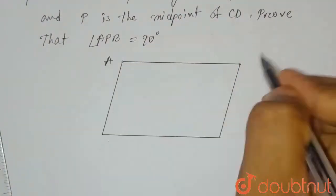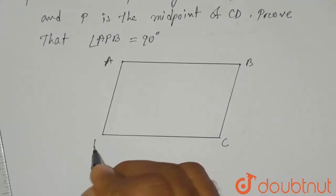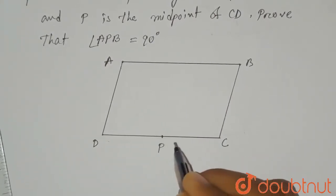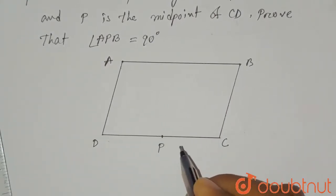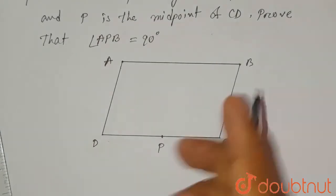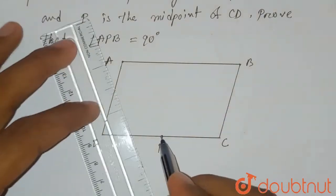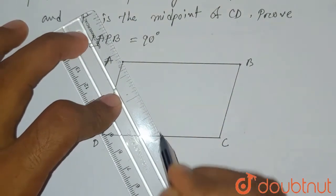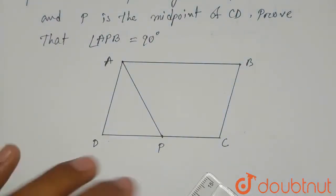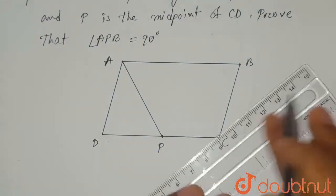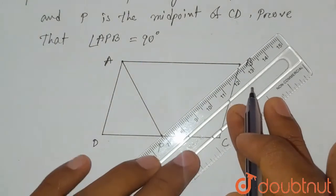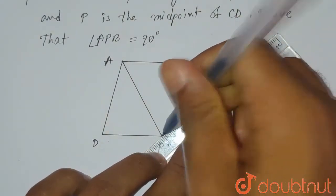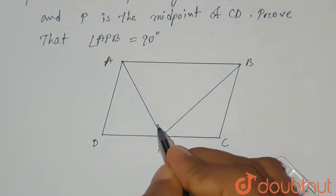This point is A, this point is B, this is C, this is D. As it is said that P is the midpoint of CD, we'll join A and P, and also join BP, to find the angle APB.